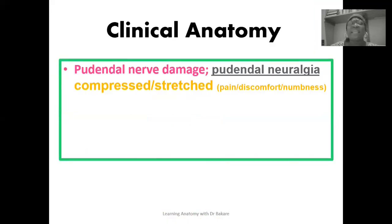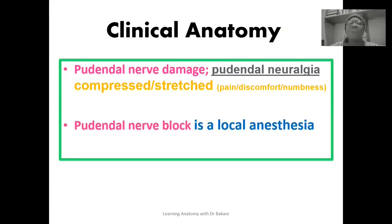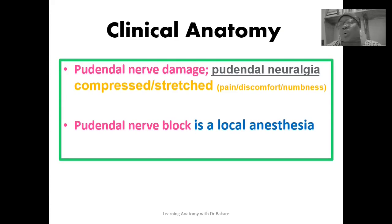Moving to clinical anatomy — pudendal nerve damage. We will look at pudendal neuralgia, which is a compression or stretching of the pudendal nerve within the pudendal canal. This causes discomfort, pain, and numbness. We also have the pudendal nerve block, which is a local form of anesthesia where an anesthetic agent is injected into the nerve to render it inactive so that a surgical procedure can be performed.